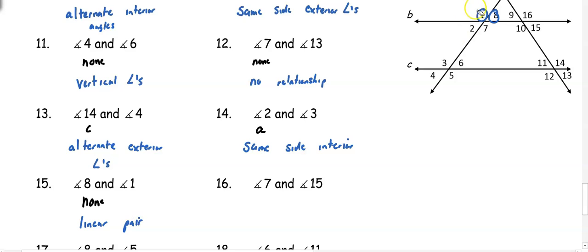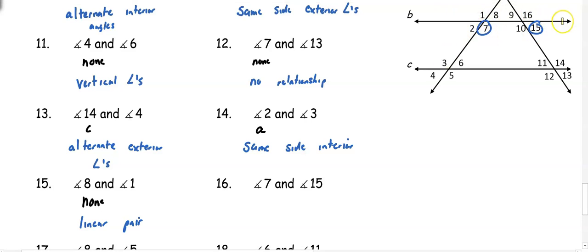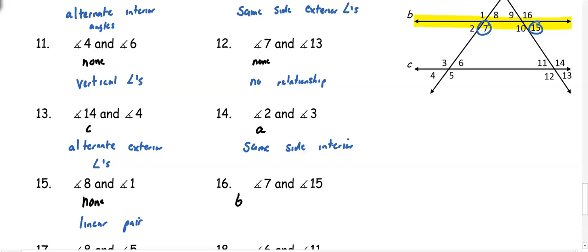Number 16: angle 7 and angle 15 are both touching line B, so line B is our transversal. This one gets tricky because one angle seems inside and one outside, but if you look carefully at the group of four, the angles are in the same position within their respective groups — which means these are corresponding angles.